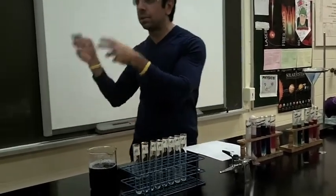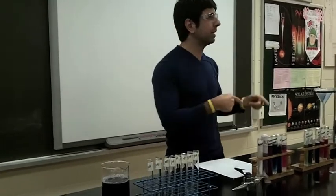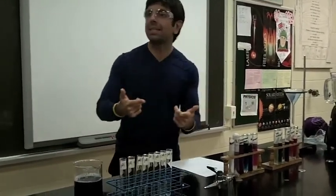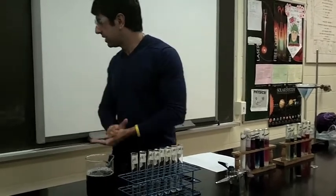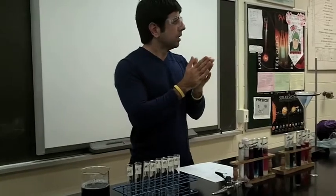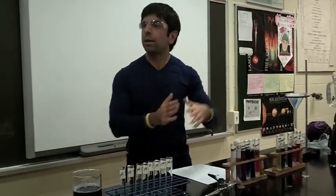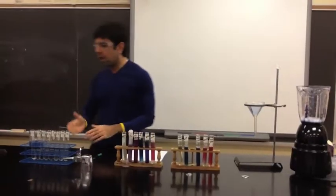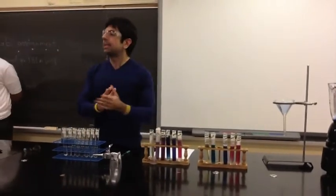The closer we are to zero, the more acidic something is; the closer we get to fourteen, the more alkaline or basic it's considered. A pH value of seven, right in the middle, is neutral — anything smaller than seven is more acidic, anything greater than seven is more basic.